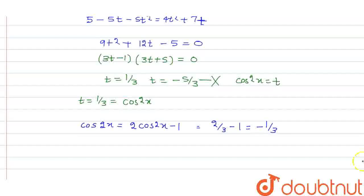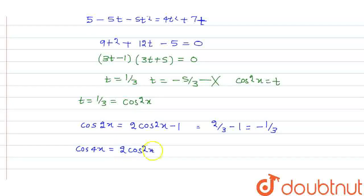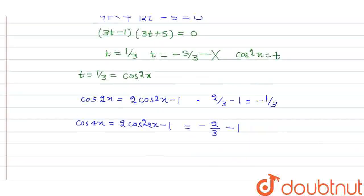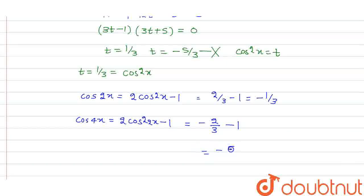Then find cos 4x. So cos 4x is equal to 2 cos square 2x minus 1. So that will be minus 2 by 3 minus 1. So that will be minus 2 by 3 minus 5 by 3. So this is our answer.